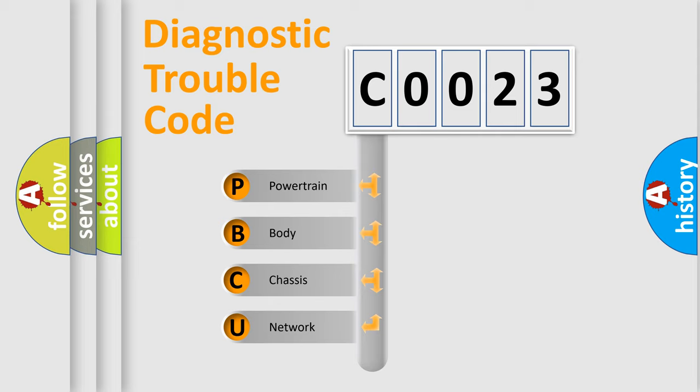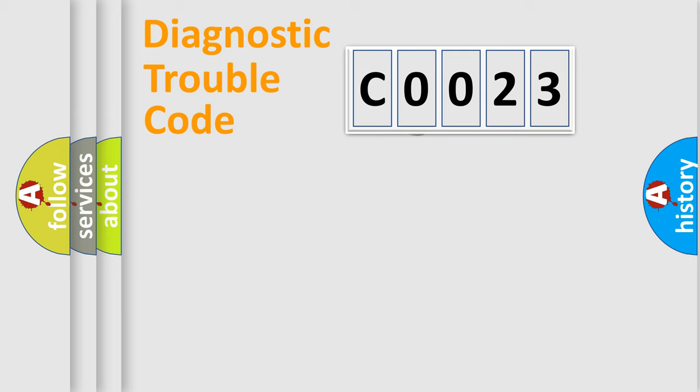We divide the electric system of automobile into four basic units: Powertrain, Body, Chassis, and Network. This distribution is defined in the first character code.